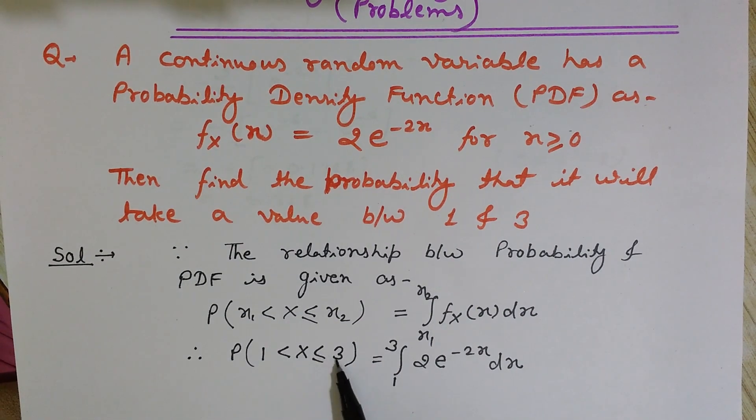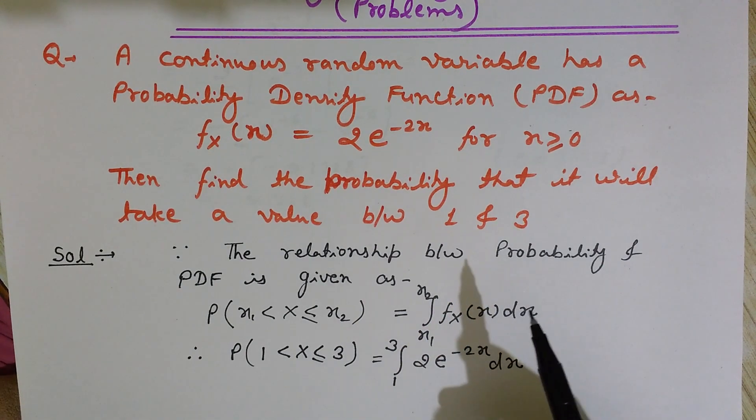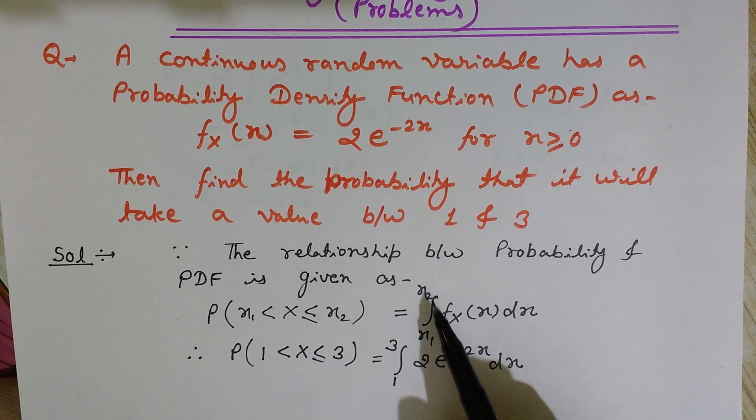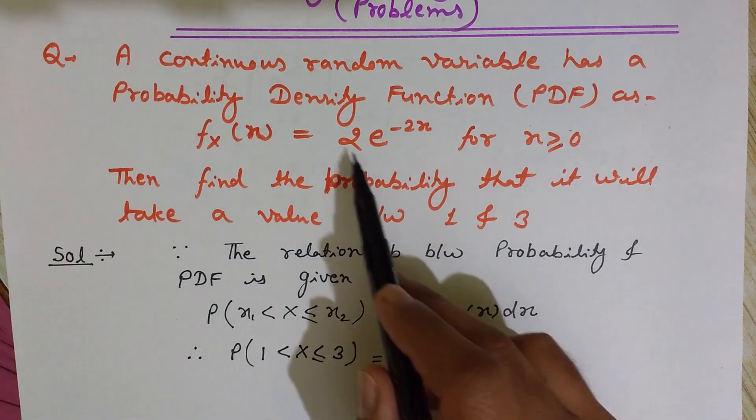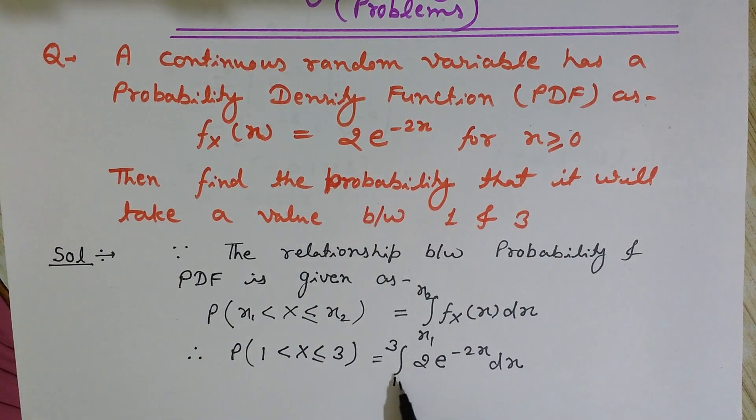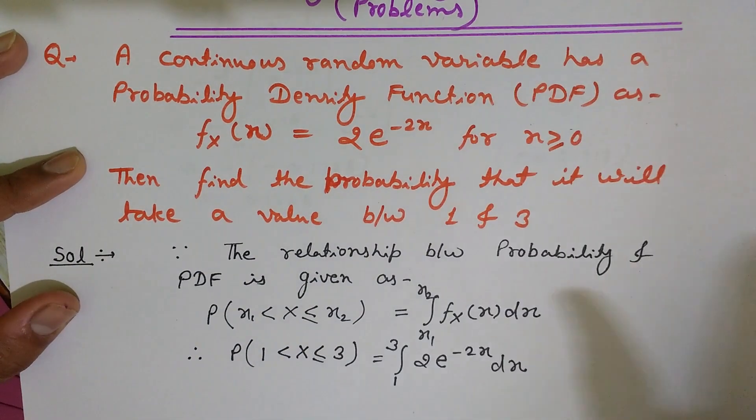This probability is given by integrating the probability density function from these two limits, 1 and 3, between which we want to find the probability. These values are written at these places, and we integrate the probability density function. We need to find the definite integration of this PDF from 1 to 3 limits with respect to x.